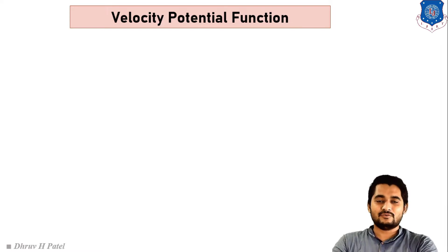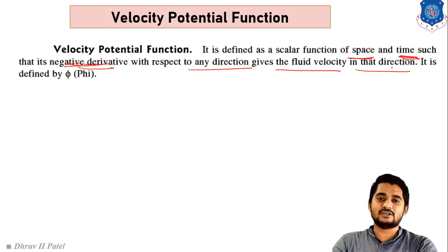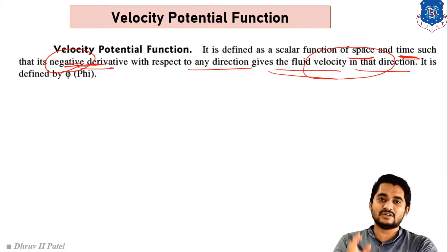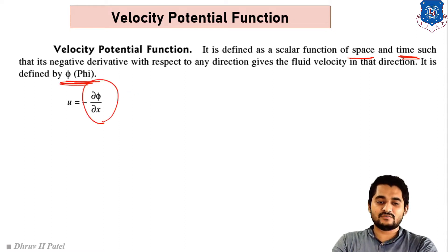What do we mean by velocity potential function? It is a scalar function of space and time such that the negative derivation with respect to any direction gives the velocity in that particular direction. Remember the key word: negative derivation gives velocity in that particular direction. Velocity potential function is represented by phi. So if we derive phi with respect to x, the negative derivation gives velocity in the x direction, that is u.